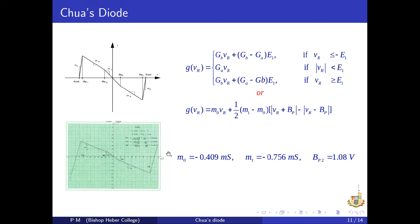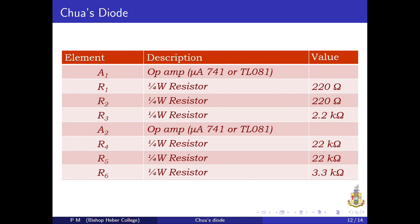By taking experimental data from the laboratory, we plot the characteristic curve and estimated the M0, M1, and BP values. M0 = −0.49409 mS, M1 = −0.765 mS, and BP = 1.08 V. These are the values chosen for the two operational amplifiers. For the first NIC, we chose R1 = 220 Ω, R2 = 220 Ω, R3 = 2.2 kΩ. For the second NIC, R4 = 22 kΩ, R5 = 22 kΩ, R6 = 3.3 kΩ. The operational amplifier used is the μA741 or alternatively TL081.